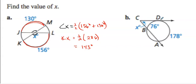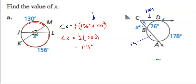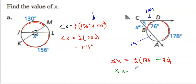Now we have an angle on the outside of the circle using a tangent line and a secant line. Since it's exterior, we take the difference rather than the sum. Larger arc is 178, minus smaller arc 76. Angle x equals one half times 102, which is 51 degrees.